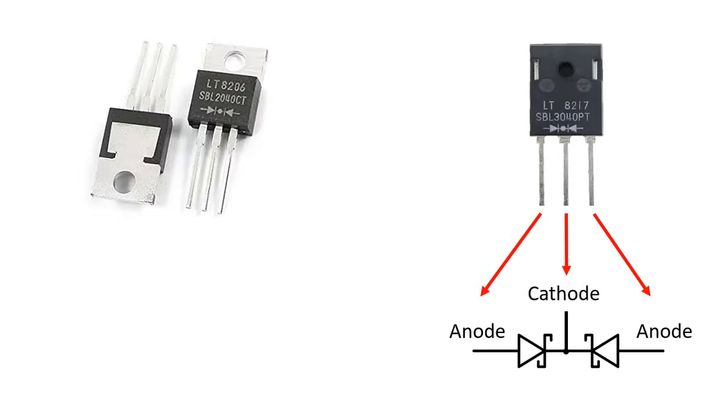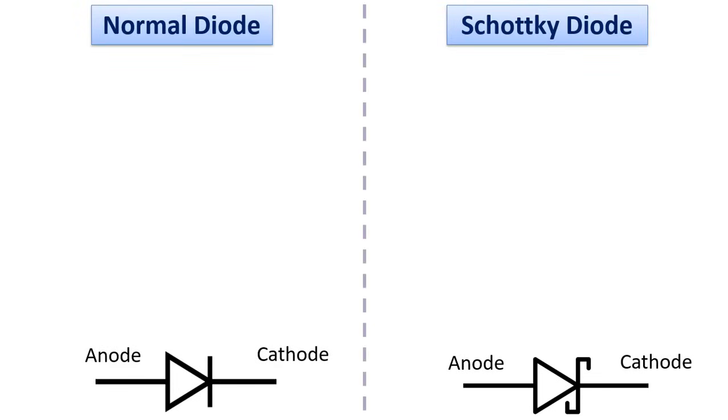Schottky diodes are not only produced with two pins, but also with three pins as here. In these diodes, the cathode pins of two Schottky diodes are combined. In other words, there are two Schottky diodes inside these three pin ones.